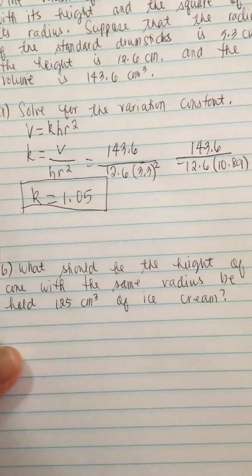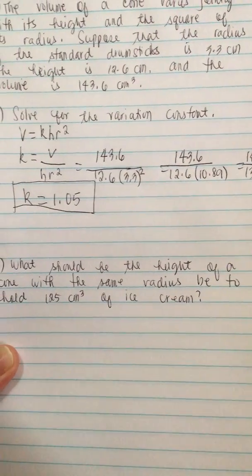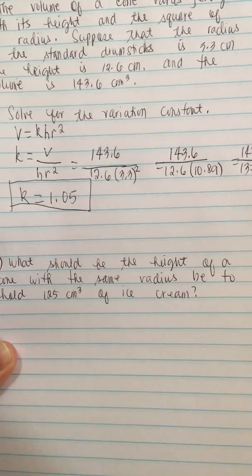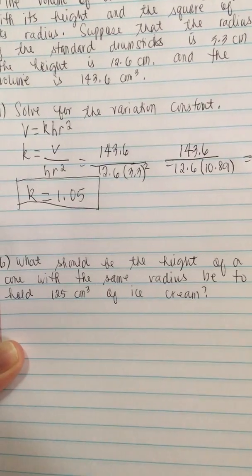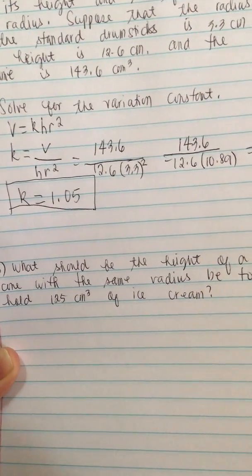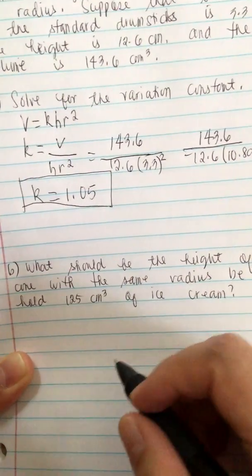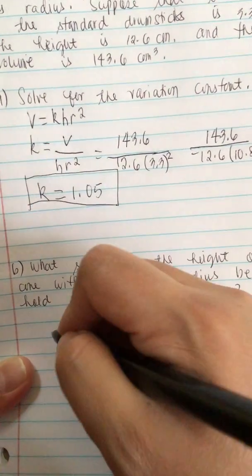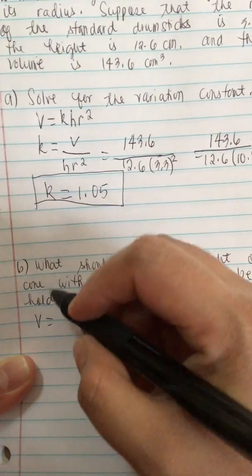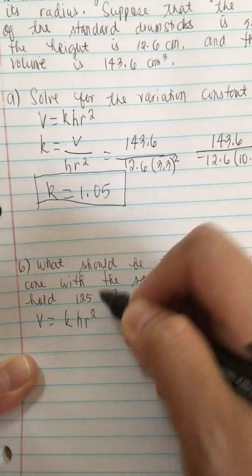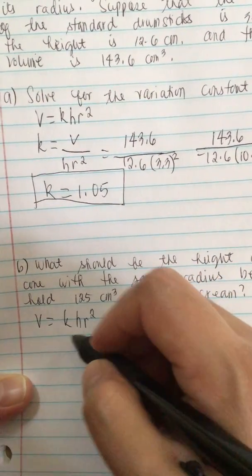Now part B. What should be the height of a cone with the same radius to hold 125 cm³ of ice cream? So we have the formula V equals K times H times R squared. So we solve for H.